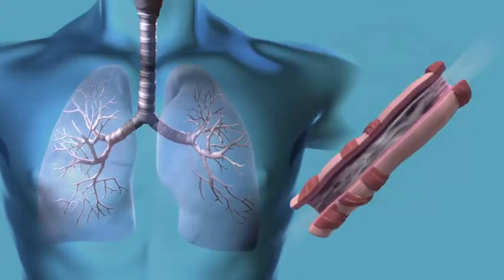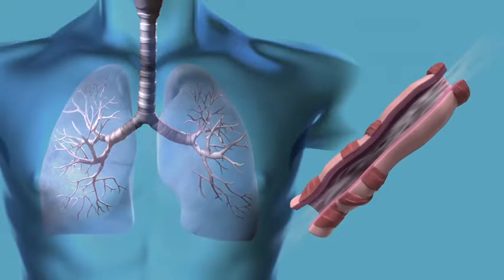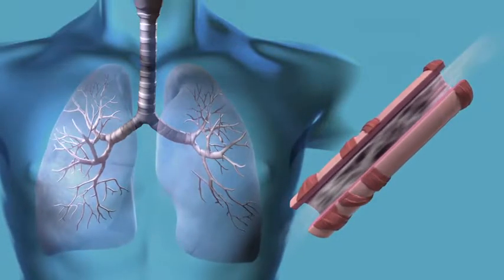Bundles of muscles surround the airways, and the contraction of these muscles directs the flow of air. The body needs a continuous supply of oxygen for cellular respiration and, at the same time, it must get rid of excess carbon dioxide, which is the poisonous waste product created in the body's cells.